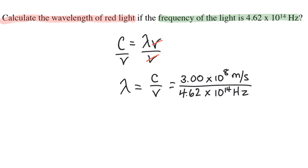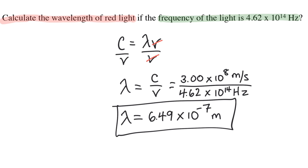I'll plug this into my calculator: 3.00 times 10 to the 8 divided by 4.62 times 10 to the 14, and I get 6.49 times 10 to the negative 7 meters.